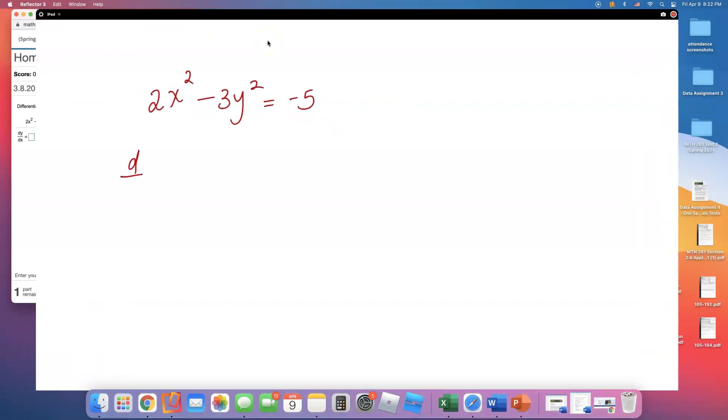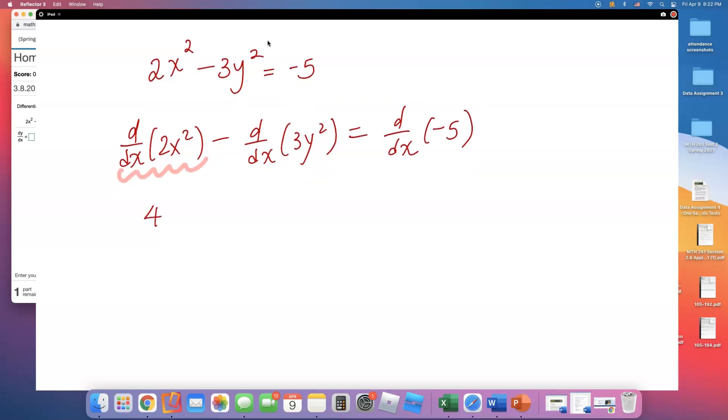So if I find the derivative of each term with respect to x, this is what I write down first. This is easy, this part right here. That's just going to be 4x. Derivative of 2x squared is 4x.